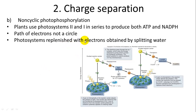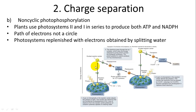In non-cyclic photophosphorylation, the initial electron donor is water. Chlorophyll splits water into hydrogen ions, electrons, and oxygen. The oxygen is released as a byproduct. The hydrogen ions help create a proton gradient, and the electrons are passed down the chain, releasing energy as they move.